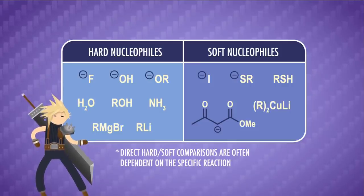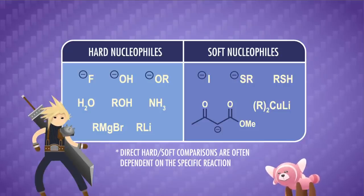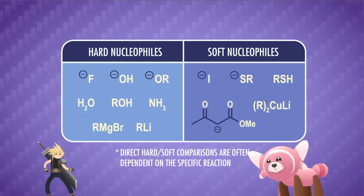Soft nucleophiles, on the other hand, are cuddly. They say, hey, let's not fight, let's hug it out instead. They have lower electronegativity, they're bigger, more polarizable, and sometimes neutrally charged. Think sulfur compounds, iodide ions, and resonance-stabilized enolates.